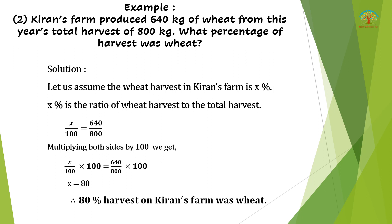Another example: Kiran's farm produced 640 kilograms of wheat from a total harvest of 800 kilograms. What percentage of the harvest was wheat? Here the number is given but we need to find the percentage. Let the wheat harvest percentage be x percent. We need to solve for x.